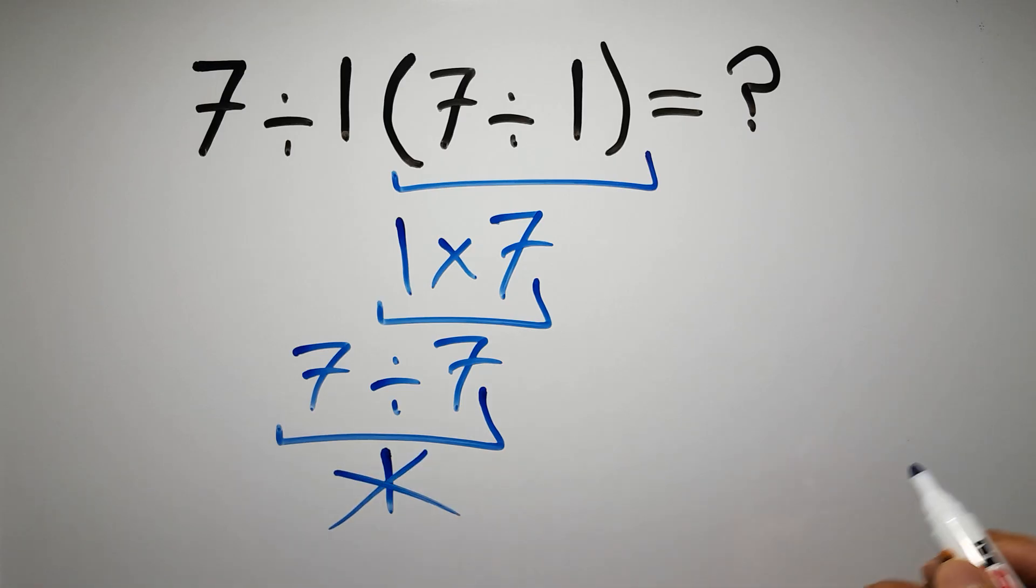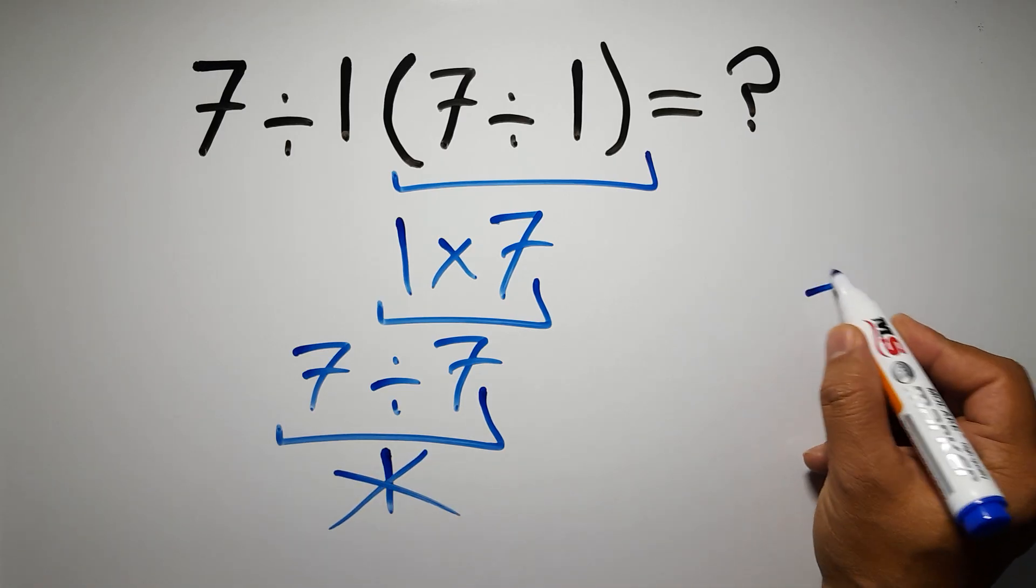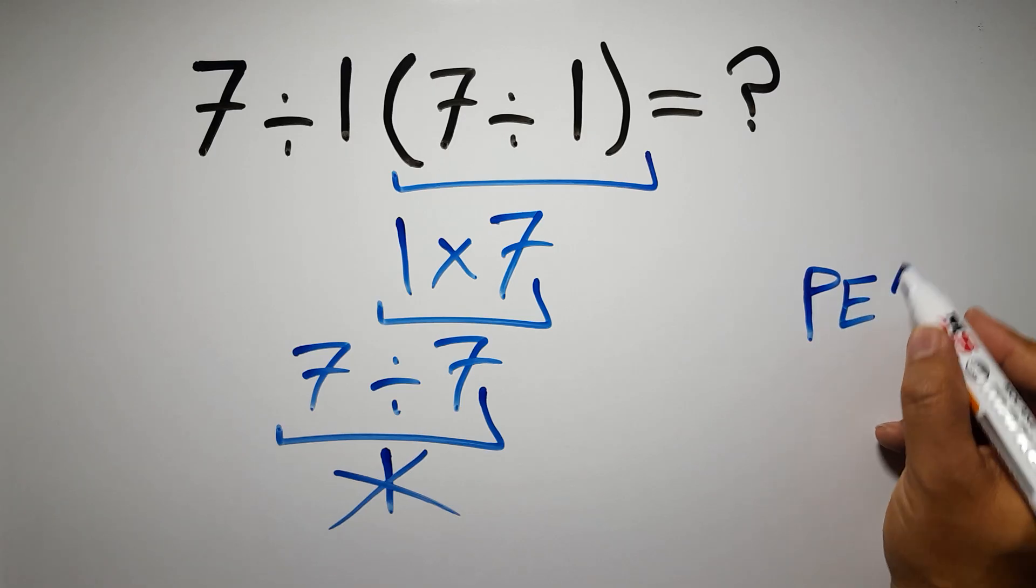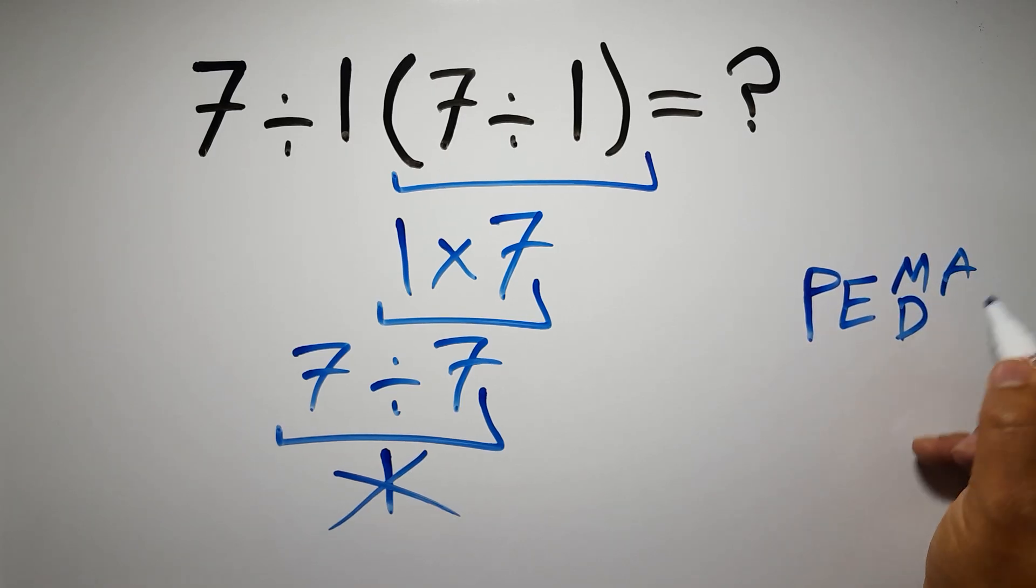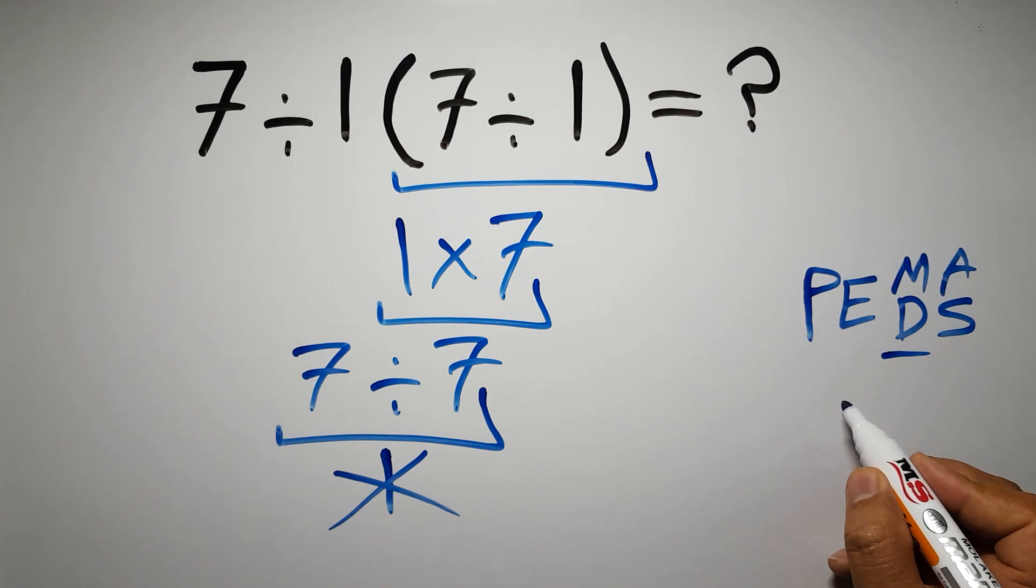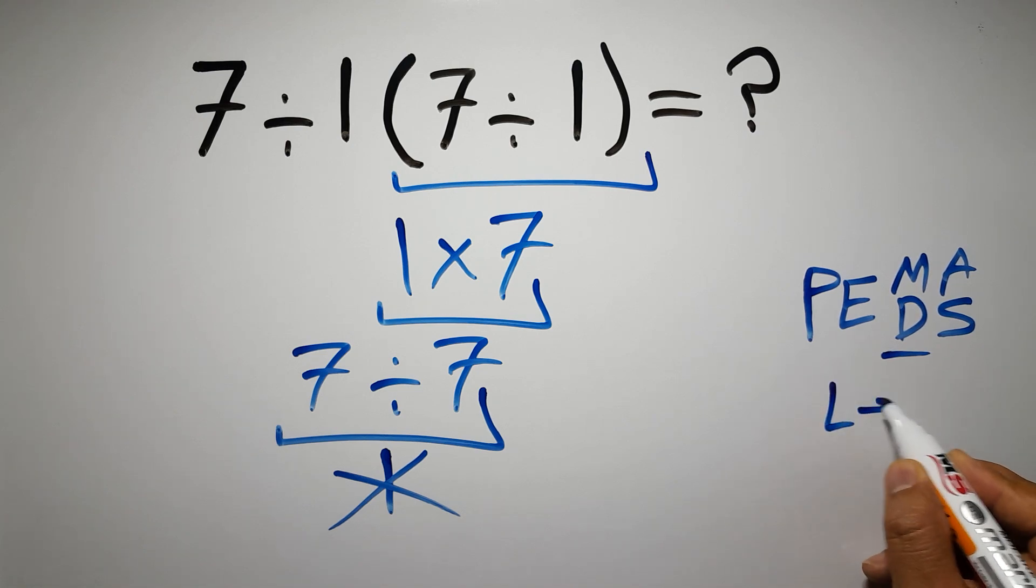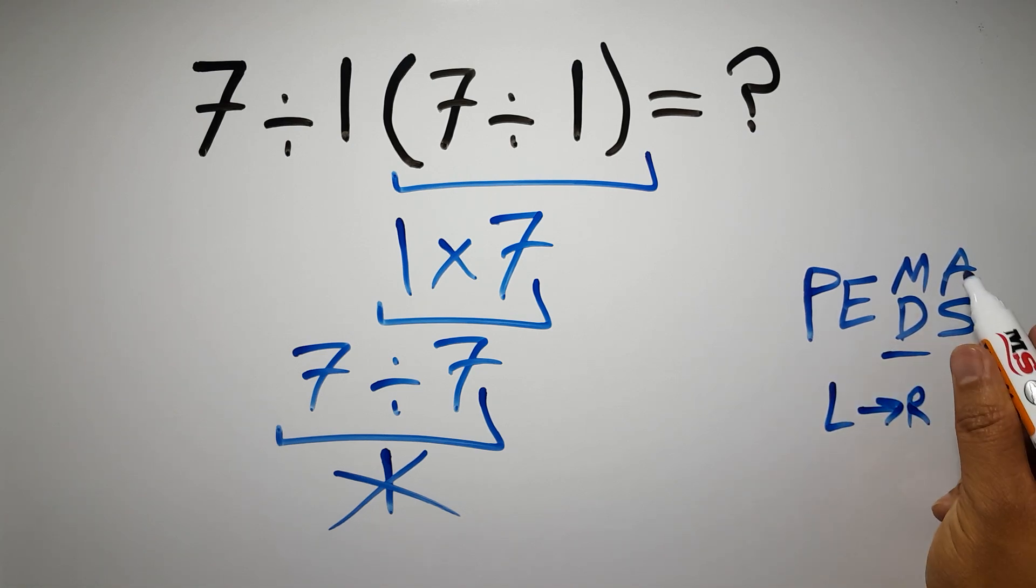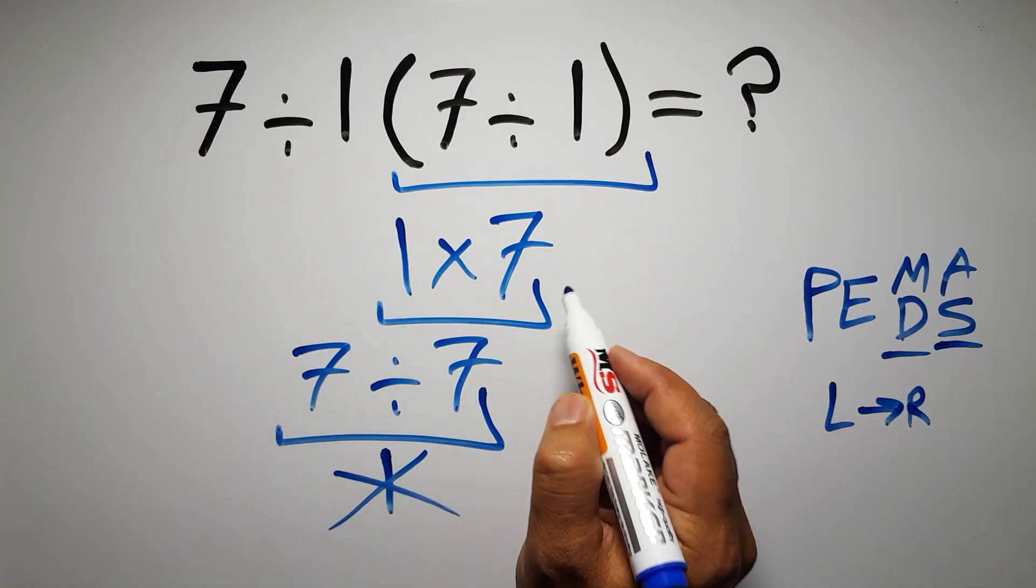According to the order of operations, first we have to do parentheses, then exponents, then multiplication or division, and finally addition or subtraction. Remember that multiplication and division have equal priority and we have to work from left to right. The same applies to addition and subtraction.